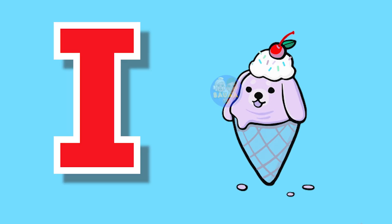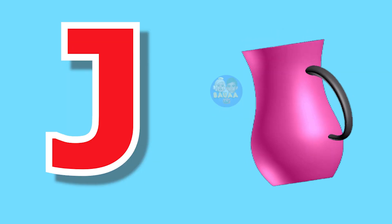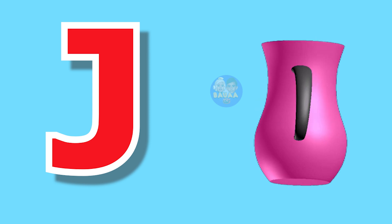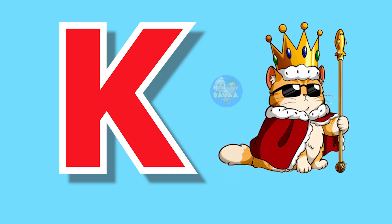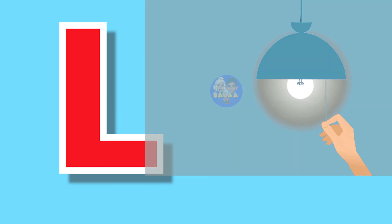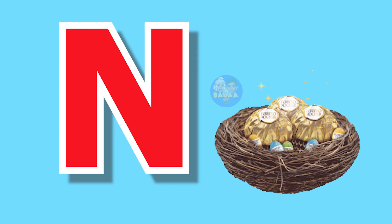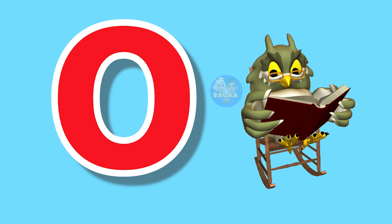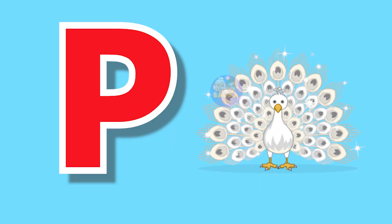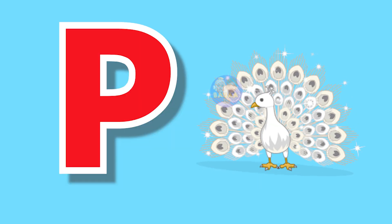I for Ice Cream, J for Jug, K for King, L for Lamb, M for Mango, N for Nest, O for Owl, P for Peacock.